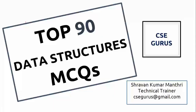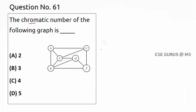Hello friends, welcome to our channel CSC Gurus. Coming to question number 61, the chromatic number of the following graph. This is about graph coloring, which means you have to color the graph such that no two vertices should have the same color.